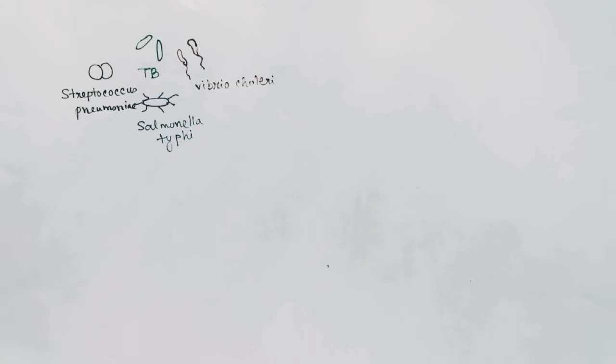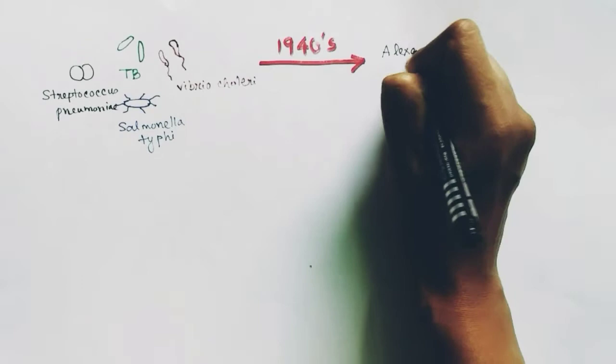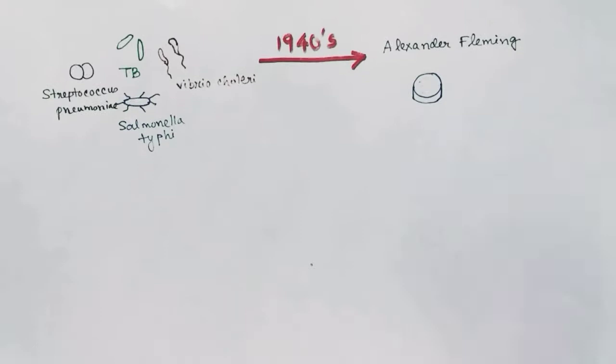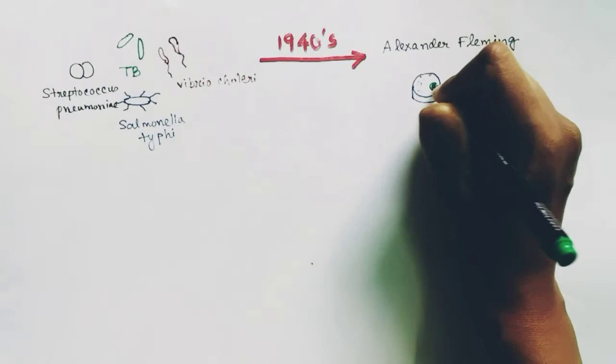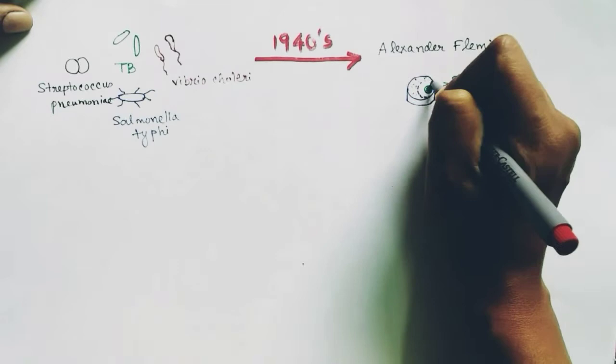But in the 1940s, scientist Alexander Fleming, who was studying some bacteria in a petri dish, went for a holiday for a week. When he came back, he saw some fungus which had grown in his bacterial petri dish. When he saw it under a microscope, he found that the fungus had killed the bacteria surrounding it. He found something which could kill bacteria, and that fungus was penicillin.